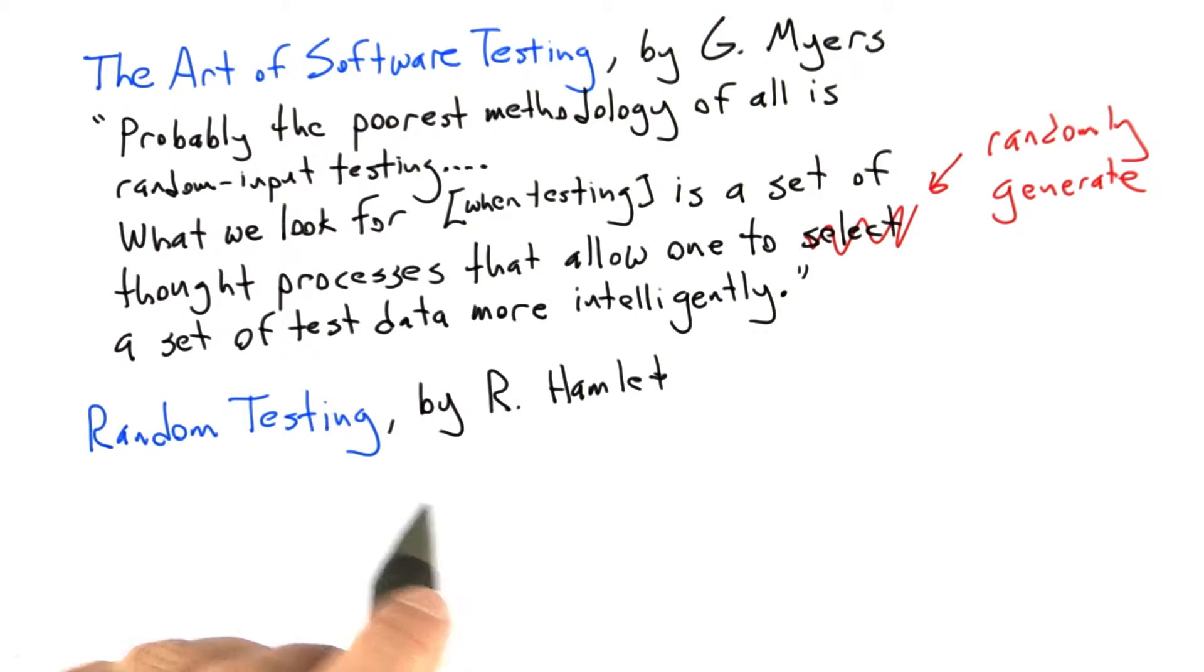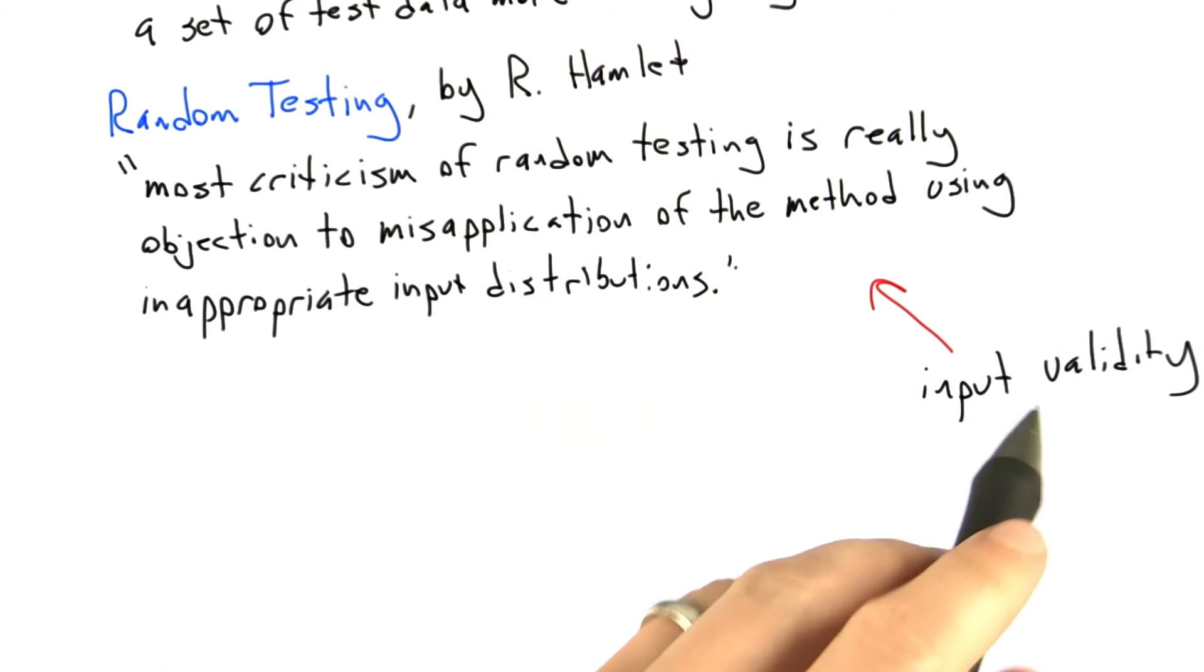So another classic piece of work is a book chapter called Random Testing by Richard Hamlet. And in this chapter he says, most criticism of random testing is really objection to misapplication of the method using inappropriate input distributions. And so what Hamlet is really talking about here is the input validity problem that we've just been discussing.